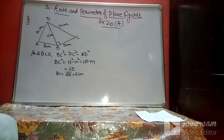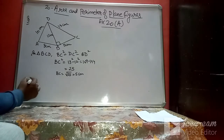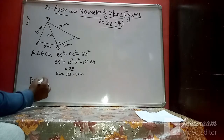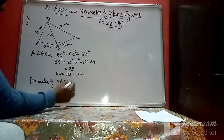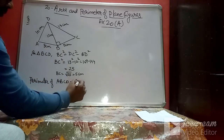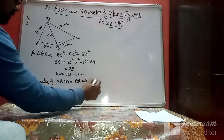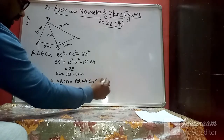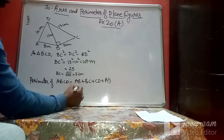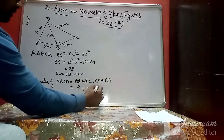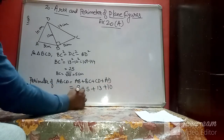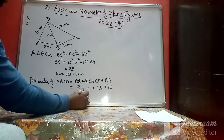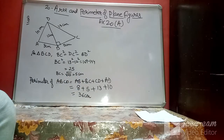Now we calculate the perimeter. The perimeter of ABCD is the sum of all sides: AB + BC + CD + AD = 8 + 5 + 13 + 10 = 36 centimeters.